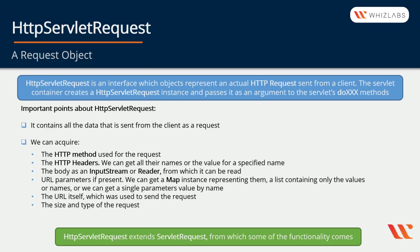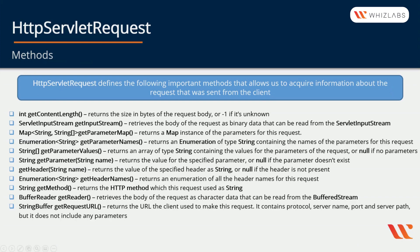HttpServletRequest extends ServletRequest, from which some of the functionality comes. HttpServletRequest defines the following important methods that allow us to acquire information about the request sent from the client. We can use getContentLength, which returns the size in bytes of the request body, or minus one if it's unknown. We can use getInputStream to retrieve the body of the request as binary data that can be read from the ServletInputStream returned from the method.